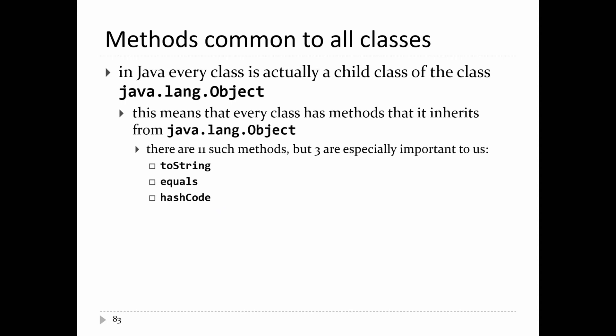There are three methods from Object that are important to us: toString, equals, and hashCode. Even if your class does not define toString, equals, or hashCode, your class ends up getting a version of those methods anyway, because java.lang.Object says those methods must be there. So for any object reference, you can call toString, equals, and hashCode on it. Our Point2 class has a toString method and an equals method even though we haven't created them yet.